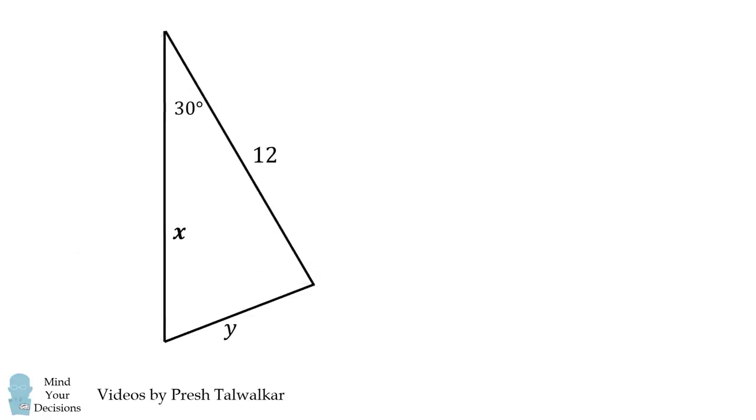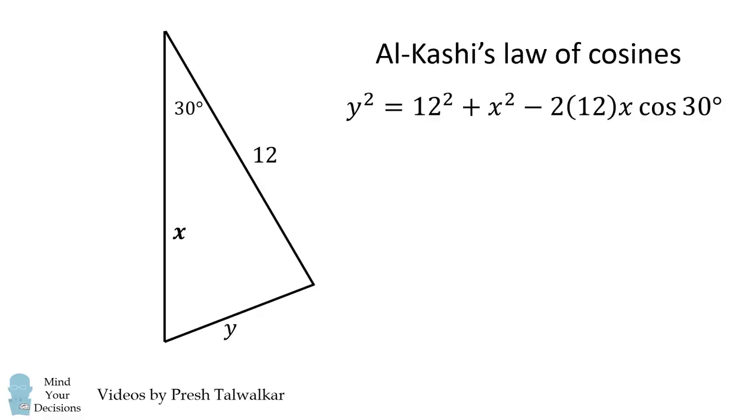For the triangle on the right, we can use Al-Kashi's Law of Cosines to get that y squared is equal to 12 squared plus x squared minus 2 times 12 times x times the cosine of 30 degrees.